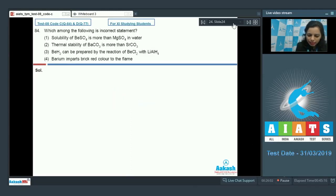Let's take next question. Which among the following is an incorrect statement? Solubility of barium sulfate is more than magnesium sulfate in water. Yes, beryllium, more hydration would be there, that's why its solubility is more. This statement is correct. Further, thermal stability of barium carbonate is more than strontium carbonate. Thermal stability depends on the atomic number in a particular group. As you move down the group, thermal stability of the compounds of the element increases. That's why this is also correct.